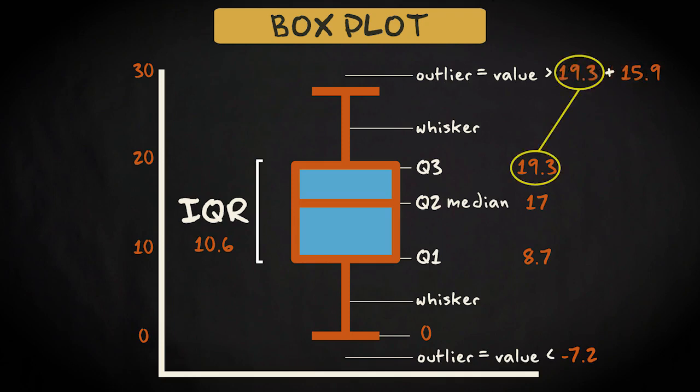Q3 is 19.3, so all values higher than 19.3 plus 15.9 equals 35.2 are outliers. We don't have values this high, so we don't have outliers on this side either. The end of the upper whisker therefore is equal to the maximum value, which is 27.7.